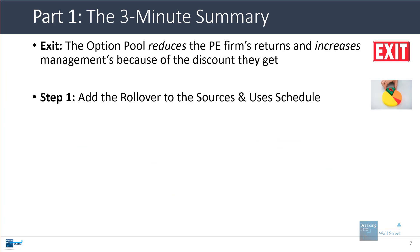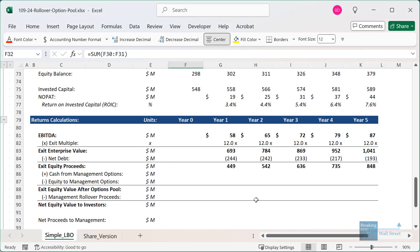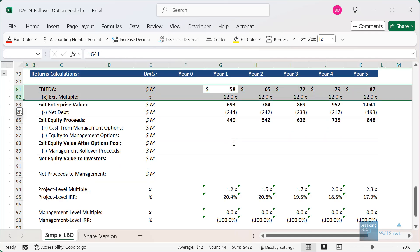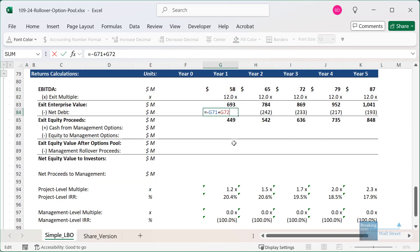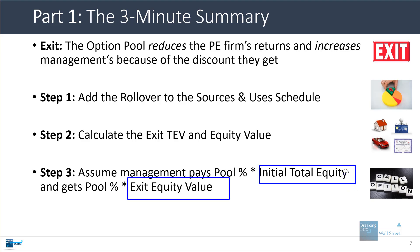The next step is to calculate the exit enterprise value and exit equity value. I've already done this at the bottom of the model — we're basing it on a simple EBITDA number and a multiple of EBITDA, then subtracting net debt to get the exit equity proceeds. Step three is to assume that the management team pays their option pool percentage times the initial total equity, and then gets back the option pool percentage times the exit equity value. This works when the exit equity value is greater than the initial total equity, meaning the company's per-share value has increased.